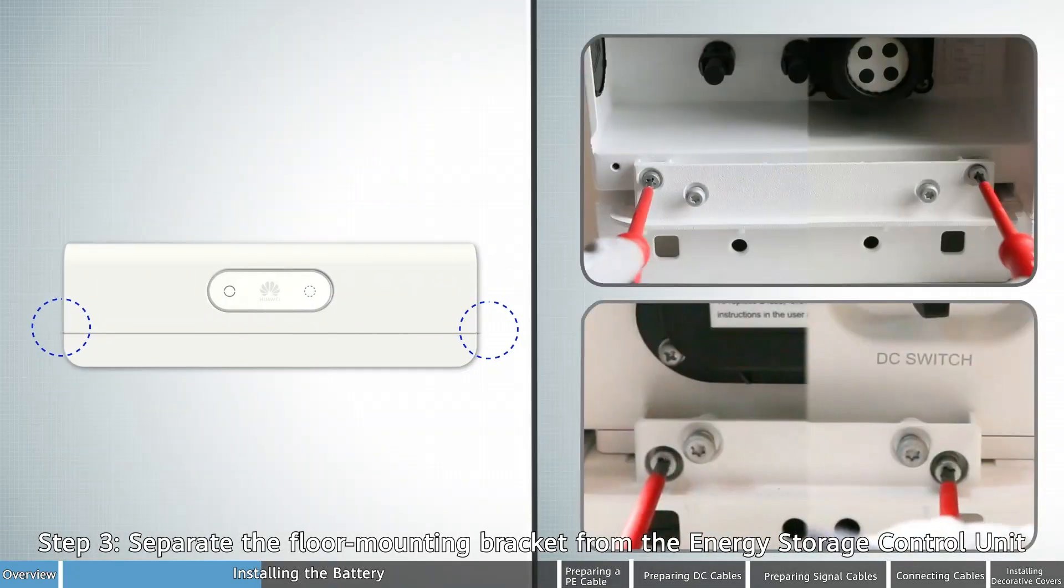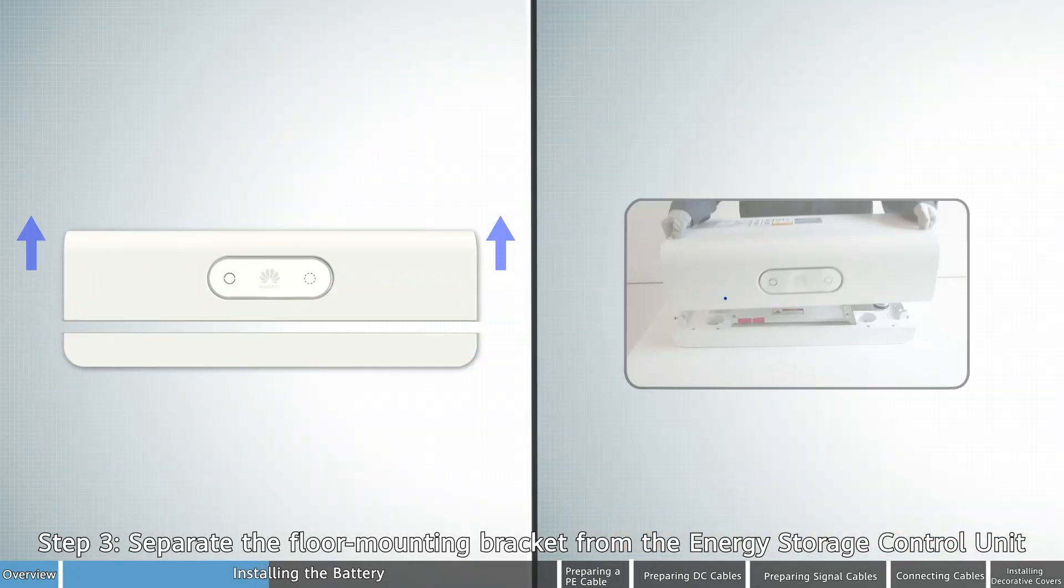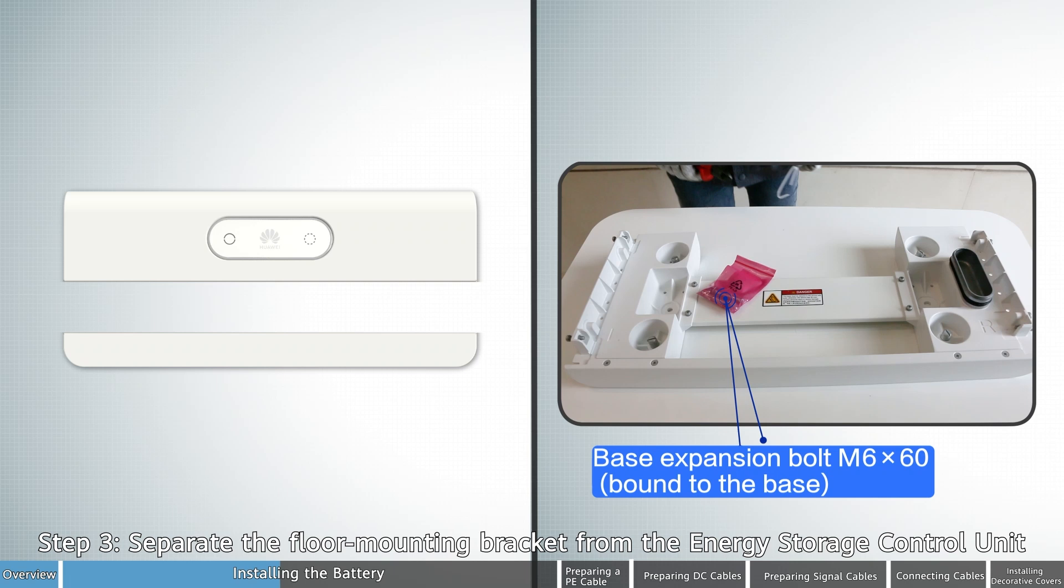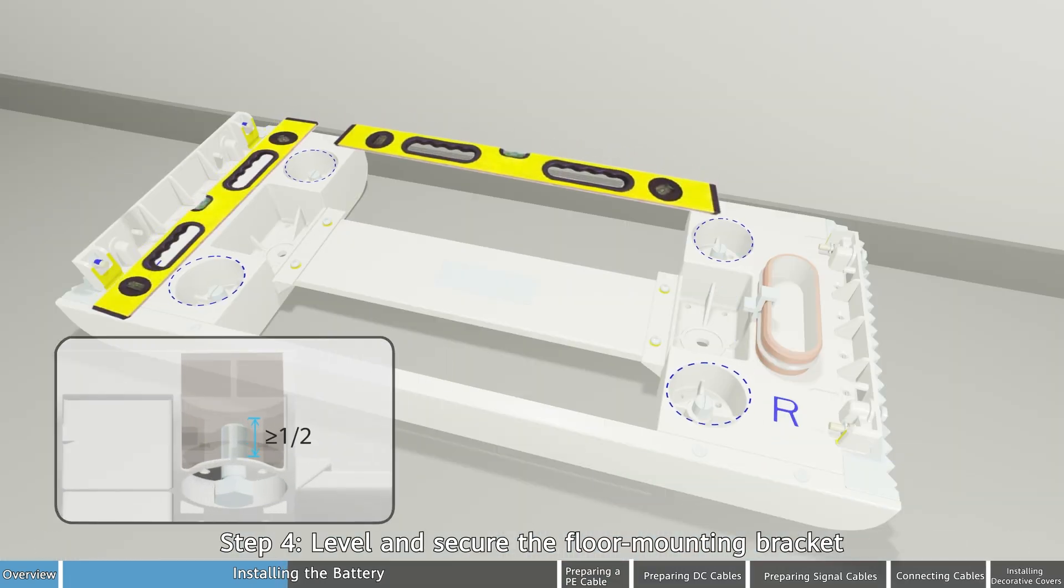Step 3. Separate the floor mounting bracket from the energy storage control unit. Step 4. Level and secure the floor mounting bracket.